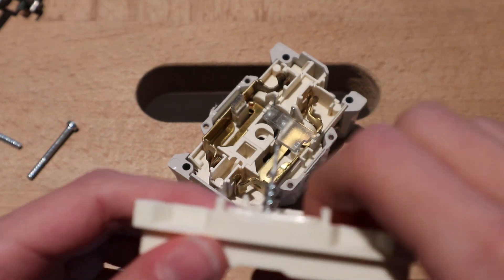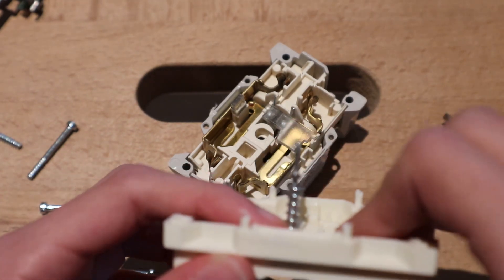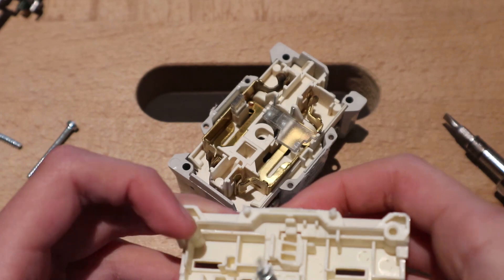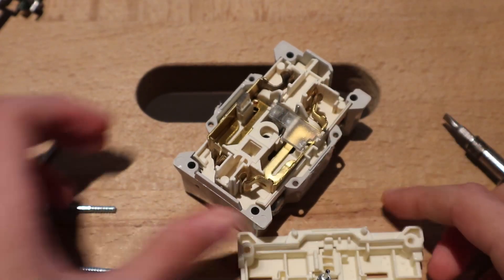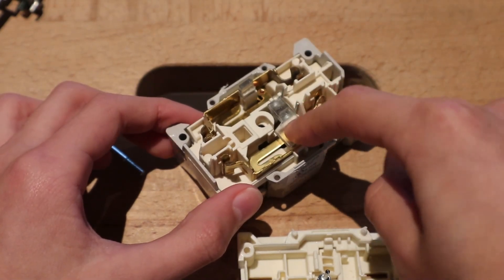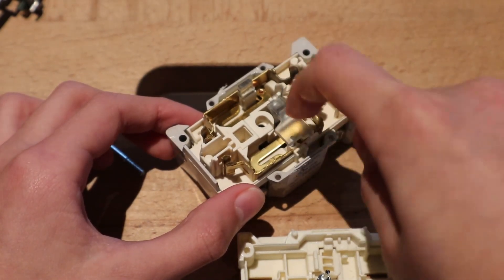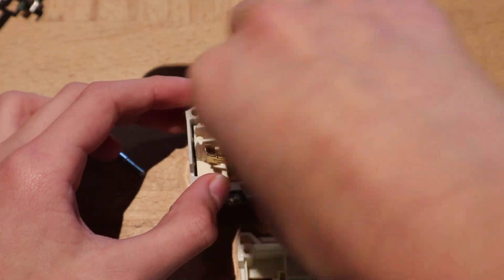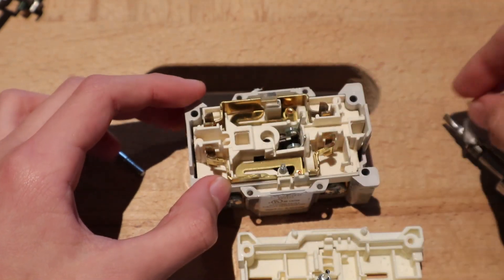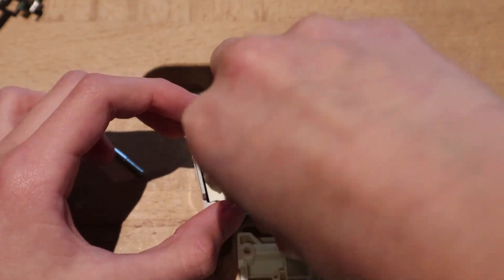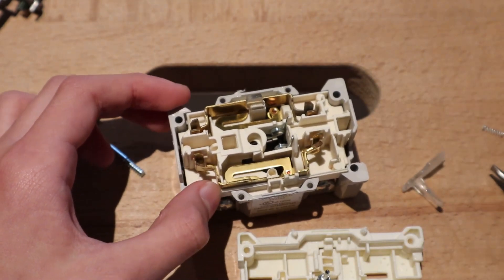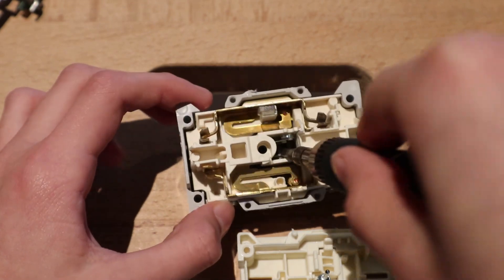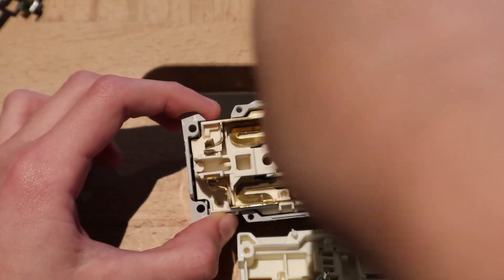The reset button has a nail on it. The test button pushes something on the inside. I think it pushes this. So let's take it out. There's another spring. This thing is just weird.